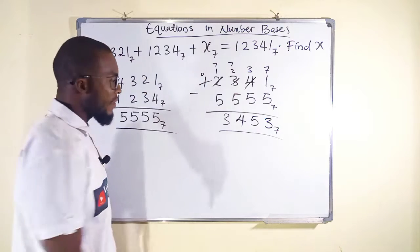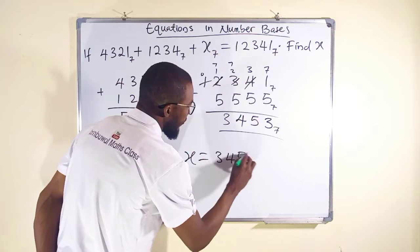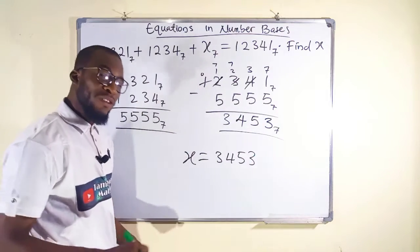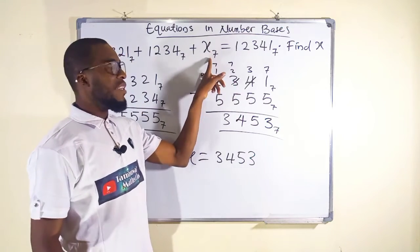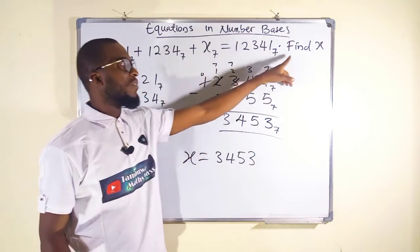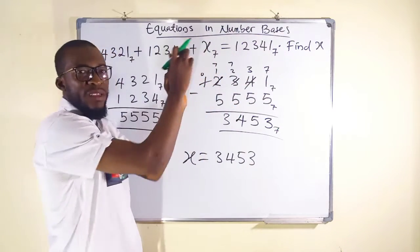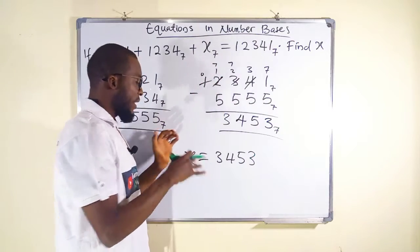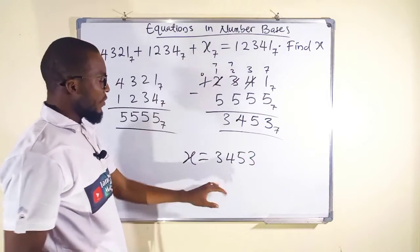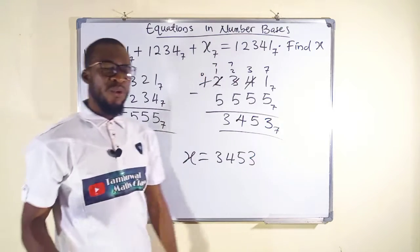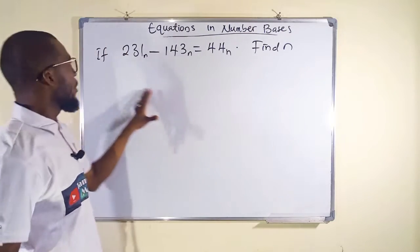So x equals 3453 in base 7. As I always say on standard questions, do not include the base with your answer since x is already in base 7. If you take this value and replace it in the original equation, it will satisfy it. So 3453 in base 7 is our answer.